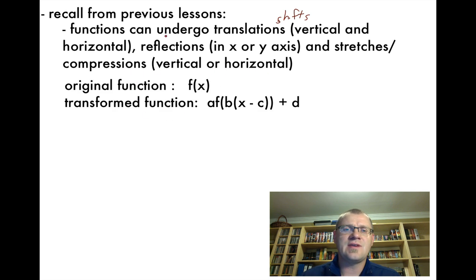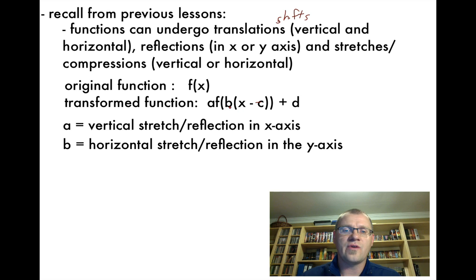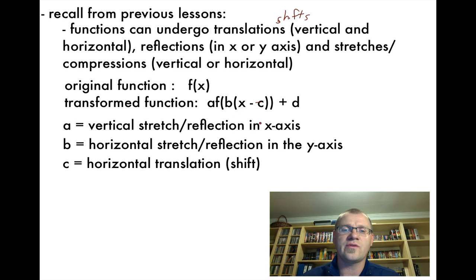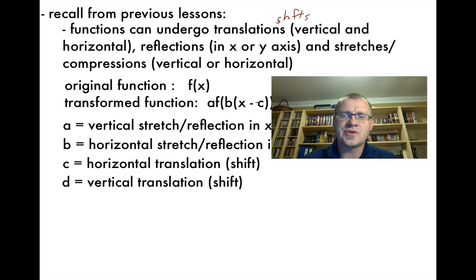Each of these transformations corresponds with a letter in a transformed function. If our original function was f(x), the transformed function can be written as a times f(bx − c) + d. So: a is our vertical stretch or reflection in the x-axis; b is our horizontal stretch or reflection in the y-axis; c is our horizontal translation or shift left or right; and d is the vertical translation or shift up and down.